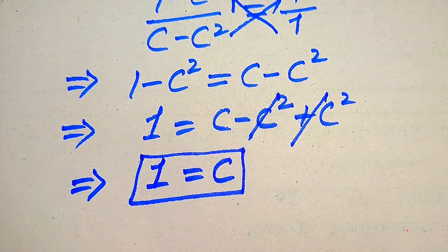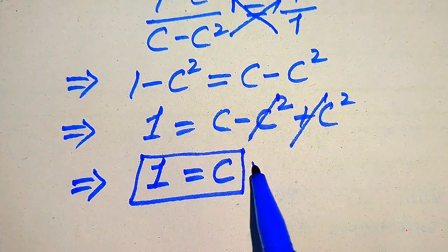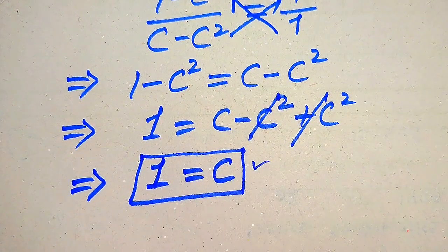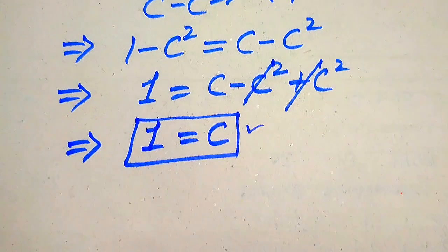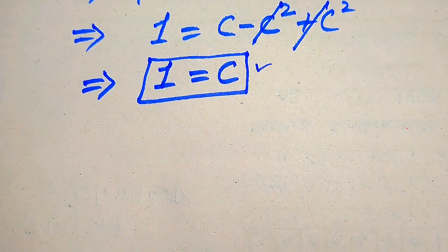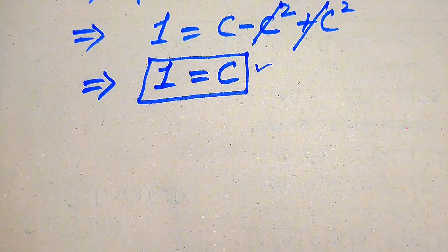We get only one root of the given equation, and that is C is equals to 1. In the next step we need to verify whether this root is a solution of the given equation or an extraneous root.